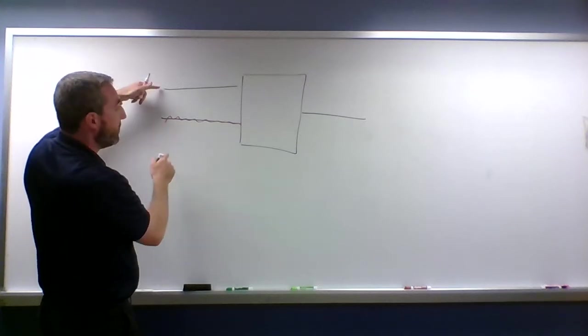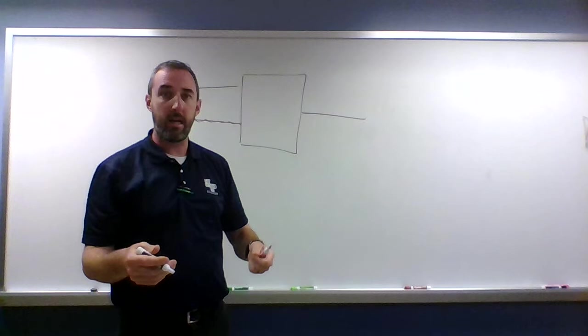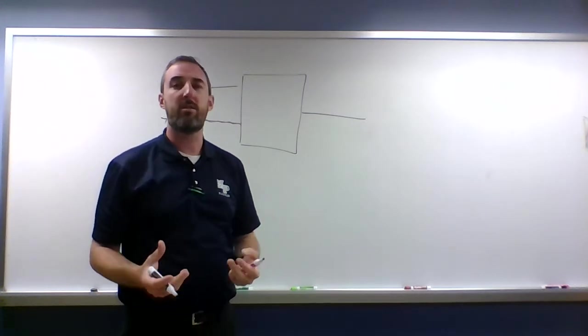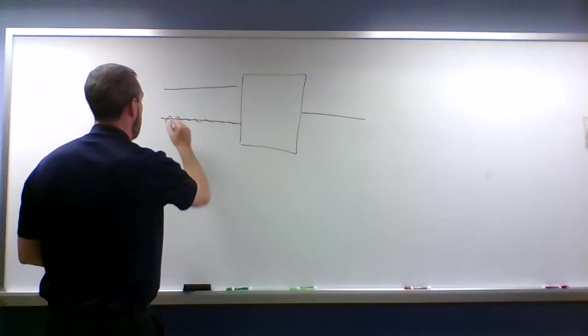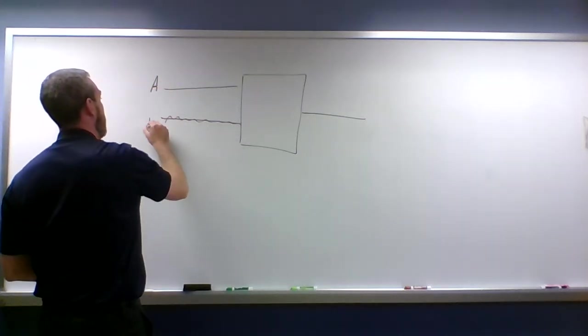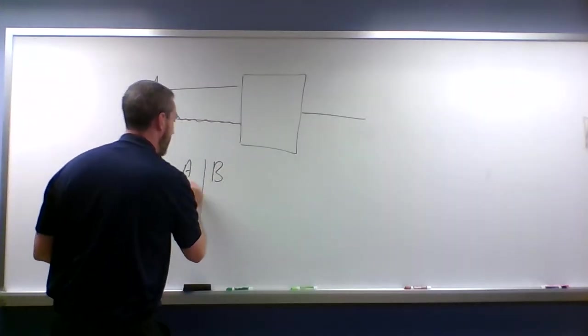That's a lot to keep in mind, so we're going to make a little system for keeping track of it. The system's called a truth table. Let's call this wire A and this wire B, and here's our table down below.